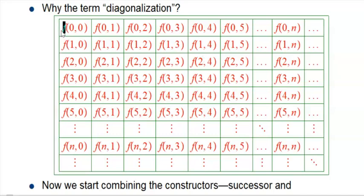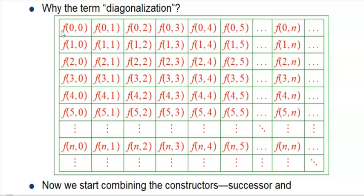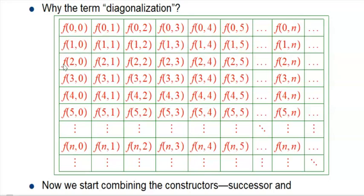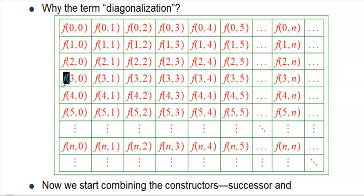Why is it called diagonalization? It's because of this kind of picture. If we draw a grid where each row is all the outputs of the f₀ function—remember that's just successor, one, two, three, four, five—and then this would be the doubles, but I just wanted to show you the format. Then here we've got f of two functions.